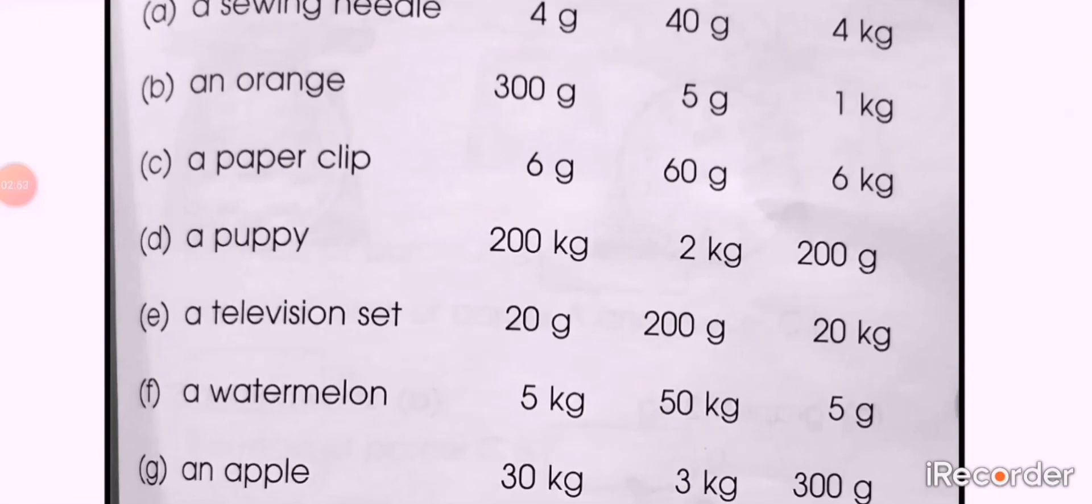Part F: a watermelon, a fruit again. Three options are here: 5 kg, 50 kg, and 5 grams. Again you will select the unit first, kilogram or gram. And if it is in kilograms, then which one is reasonable, 5 kg or 50 kg? Choose it and circle.